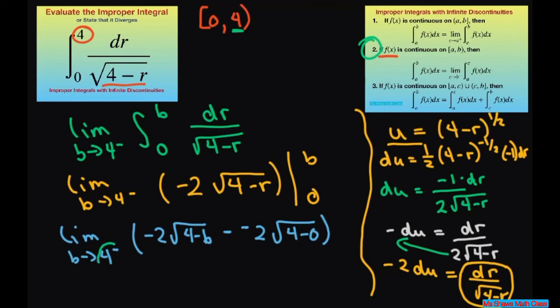Alright, so when you substitute in for your 4, this part is going to be 0. This changes to positive, and then we have 2 times the square root of 4, which is 2. So our answer is 4.